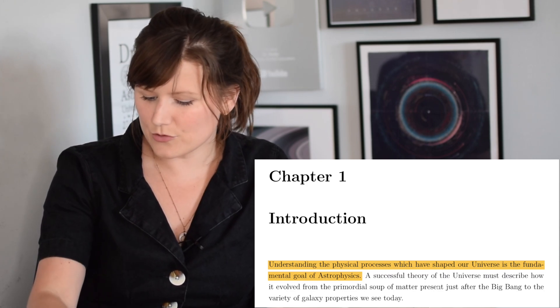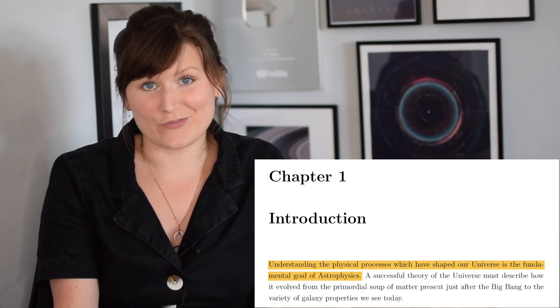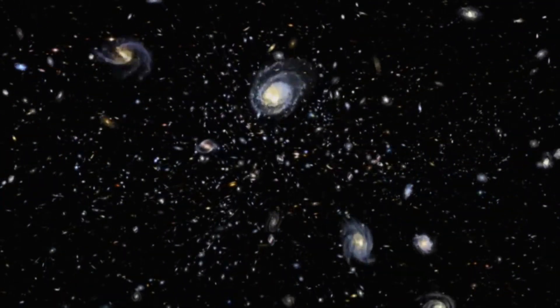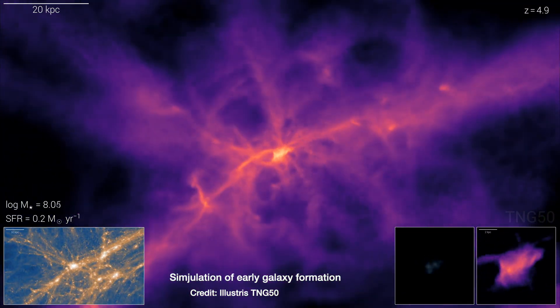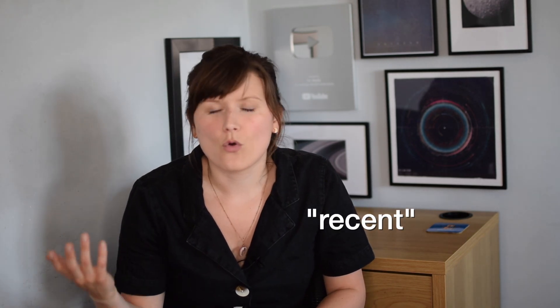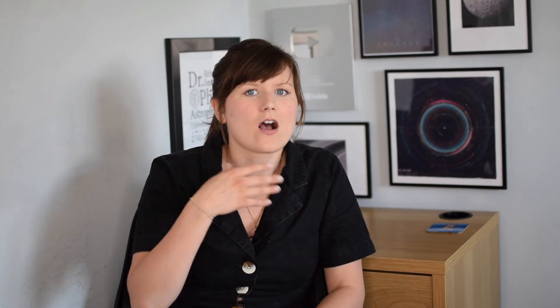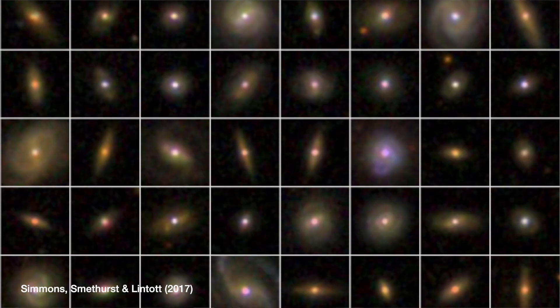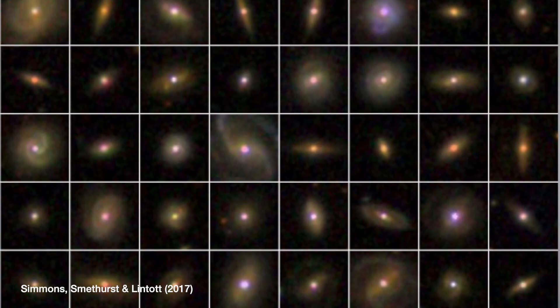The first sentence of the entire thesis is: 'Understanding the physical processes which have shaped our universe is the fundamental goal of astrophysics.' Essentially we want to understand how we went from a soup of particles right after the Big Bang to these huge structures made up of billions of stars. I focus on more recent evolution - what's been happening in say the last billion years or so to stop galaxies from forming stars, to change their shape, or to make it so that their supermassive black hole is growing. The way we study these galaxies is by recording their properties when we observe them with telescopes.